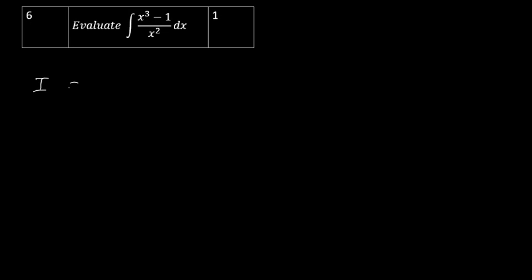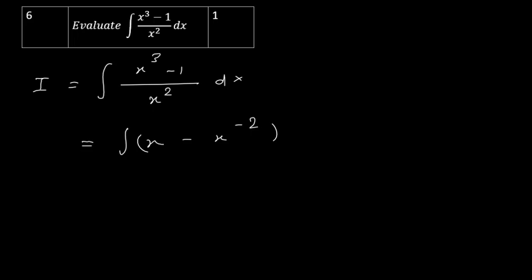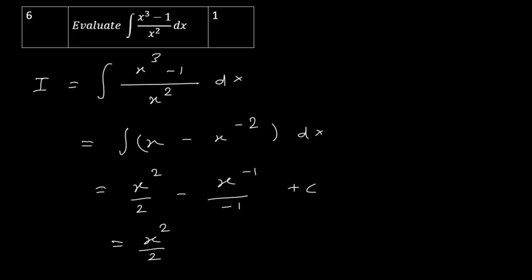Whenever the degree of the numerator is more than the degree of the denominator, it is better to divide. Here x³/x² gives x, and the remainder gives -1/x², which can be written as x^(-2). Integration of x is x²/2, and integration of x^(-2) is x^(-1)/(-1). So I = x²/2 + 1/x + c.